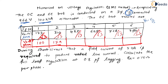Continuing the conversions: 310/√3 ≈ 179 V, 485/√3 ≈ 280 V, 605/√3 ≈ 349 V, 720/√3 ≈ 420 V, and 790/√3 ≈ 452 V. All of these are now phase values.